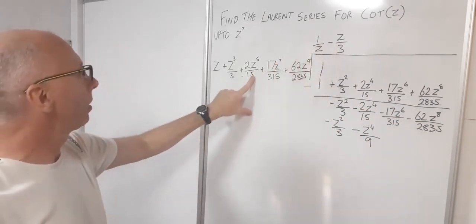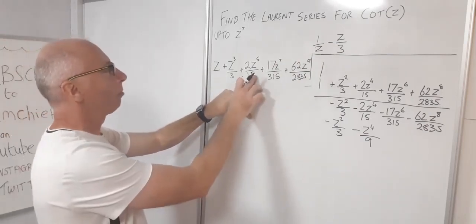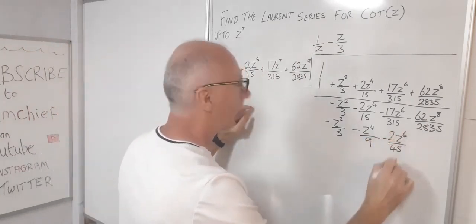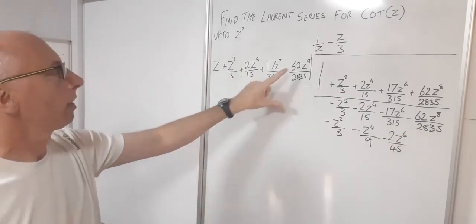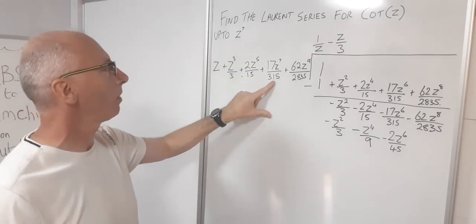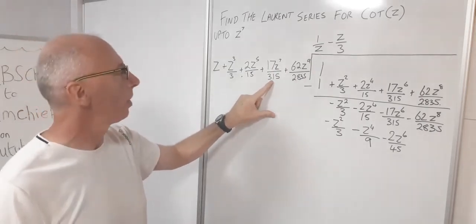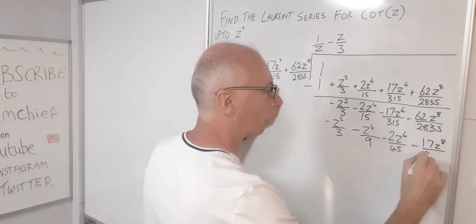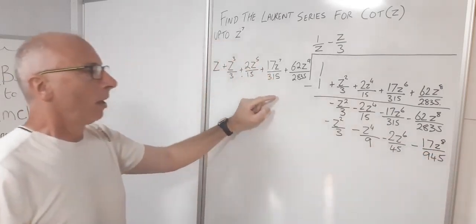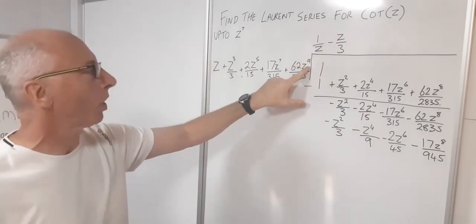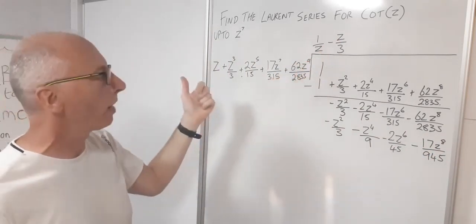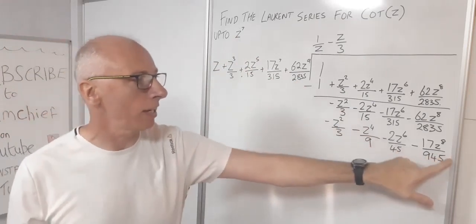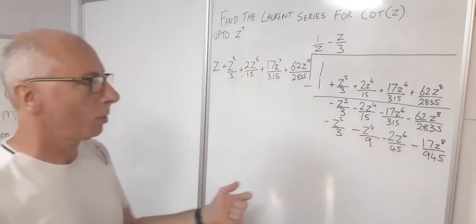Note that if we multiplied further we'd get z to the 10, but we're only interested up to z to the 7, so we stop there. Now performing the subtraction: the z squared terms cancel, giving zero. For the z to the 4 terms we have a minus and two minuses, which gives a plus, so we need to add the coefficients: minus 2 over 15 plus 1 over 9.